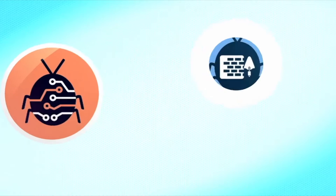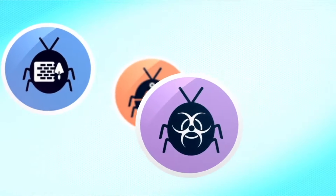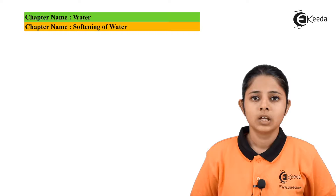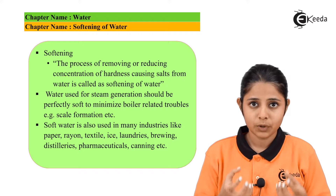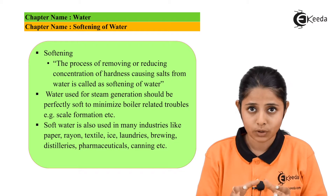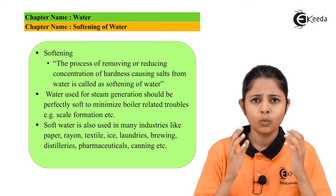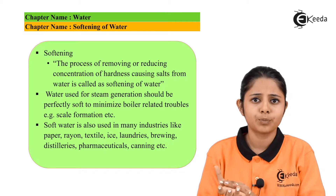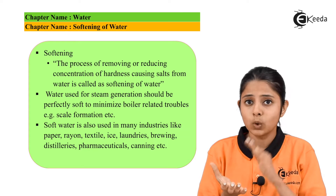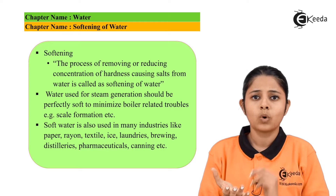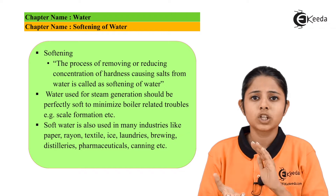Softening is the process of reducing the concentration of hardness-causing impurities inside the water. Hard water is water which has certain impurities present in it, and those impurities contribute to the hardness of water.